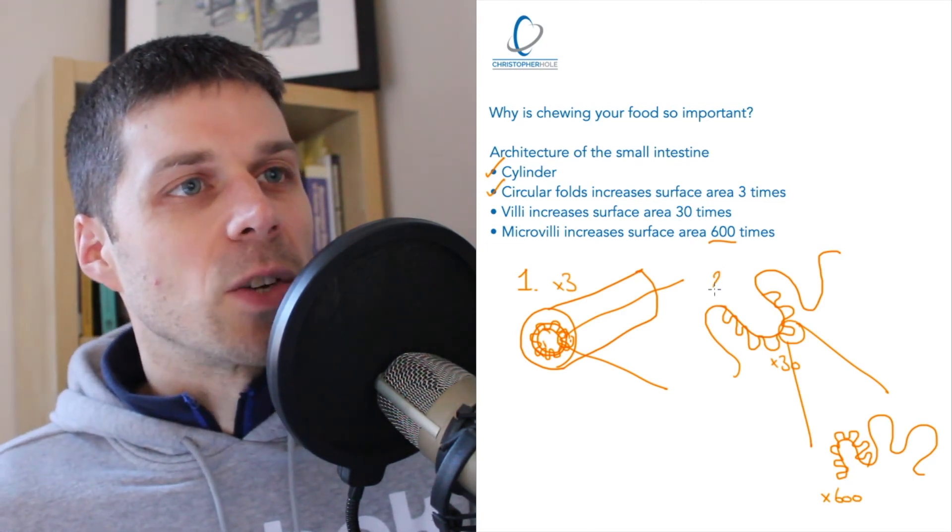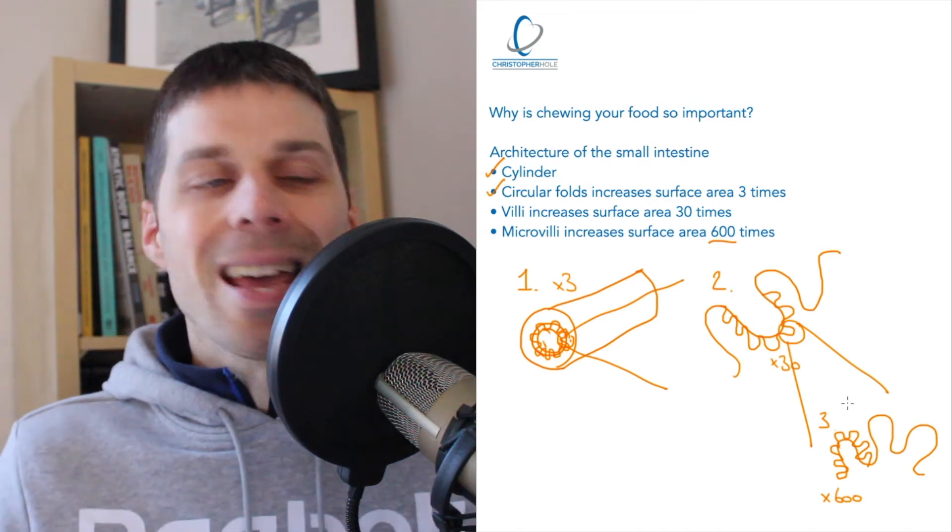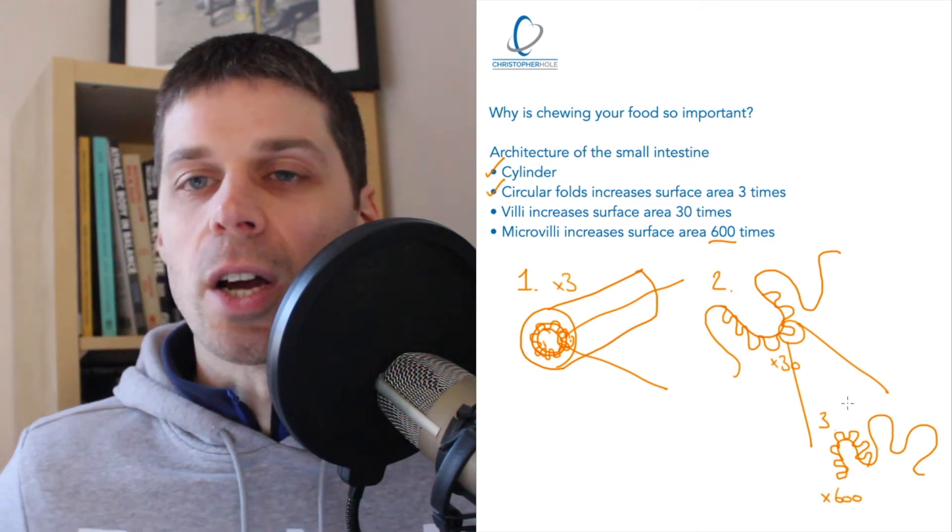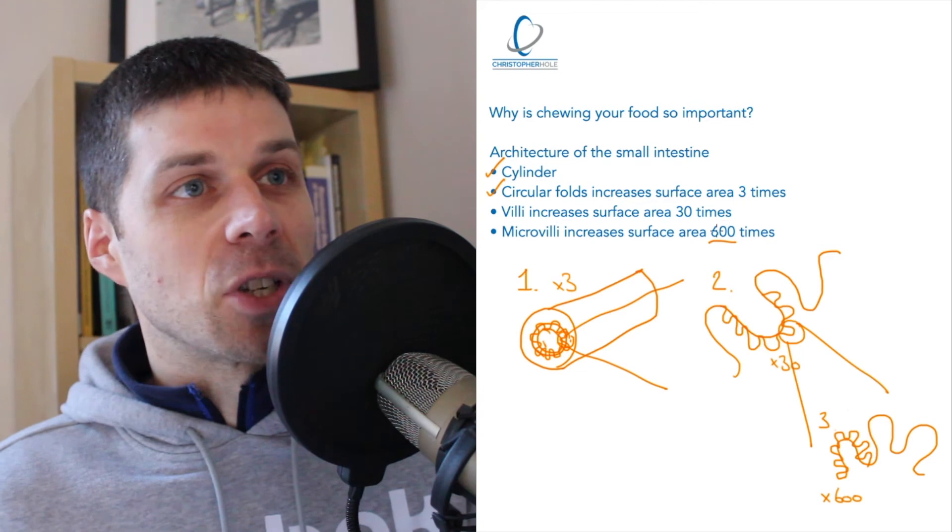So what we've got here, stage one, stage two, and stage three, is every time we magnify each layer, what we're seeing is the same structure to increase the surface area, as you can see here, up to 600 times.